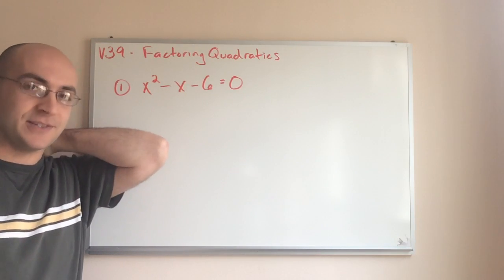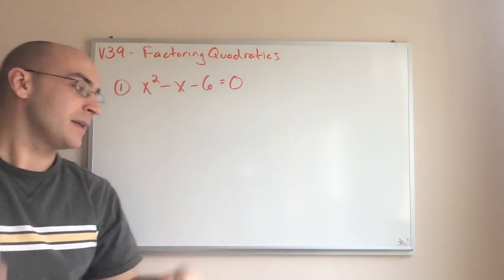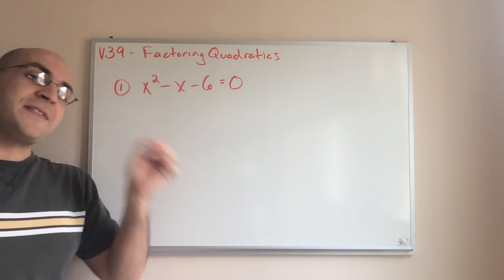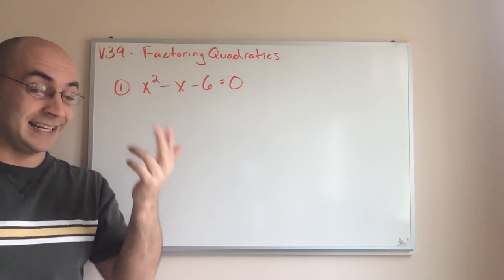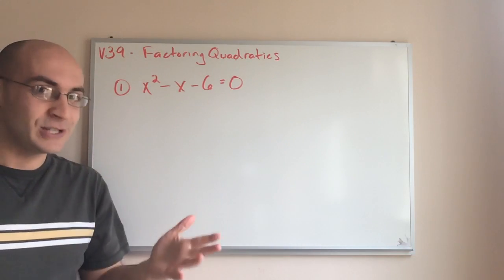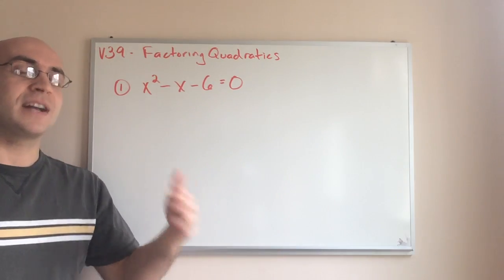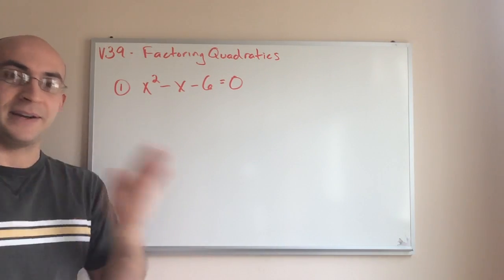Put it into Desmos and you'll see it's a quadratic. It opens up to the top. I'm trying to find the factors or the zeros or where the function crosses the x-axis or the solutions. They all mean the same thing. I'm trying to find where the function crosses the x-axis, period, end of story.